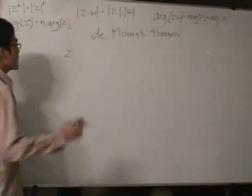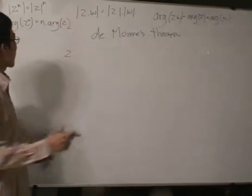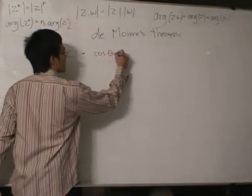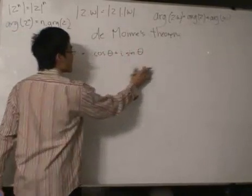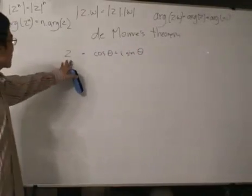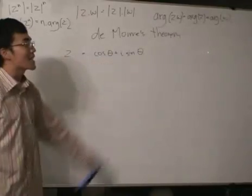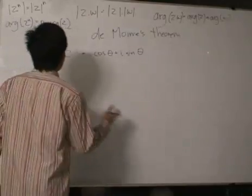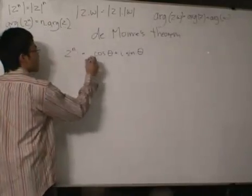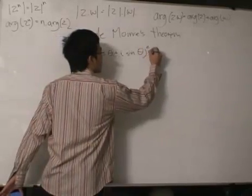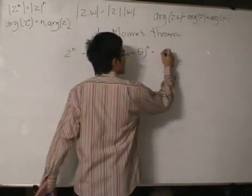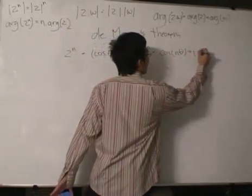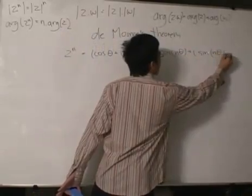Let's take a complex number z equals cosine theta plus i sine theta. So we've got a complex number z equals cosine theta plus i sine theta in polar form. What De Moivre's theorem says is that if we take z to the power of n, we get cosine n theta plus i sine n theta.